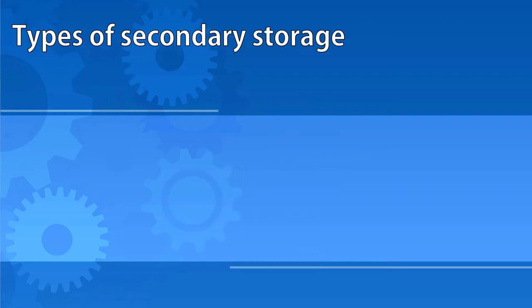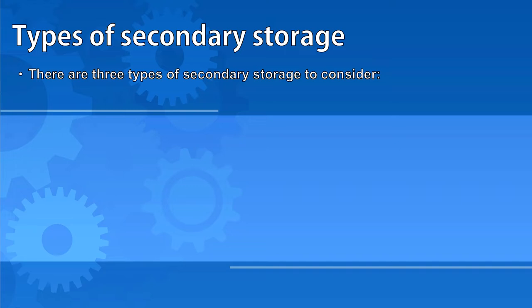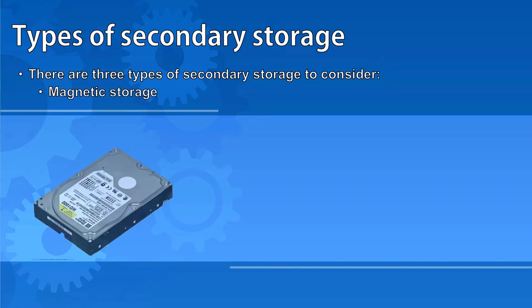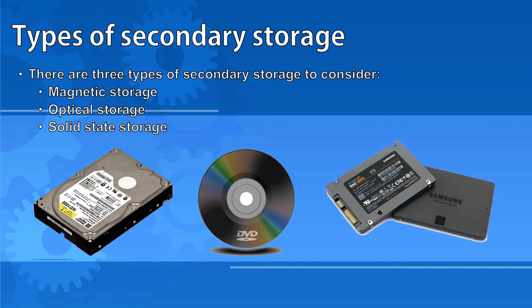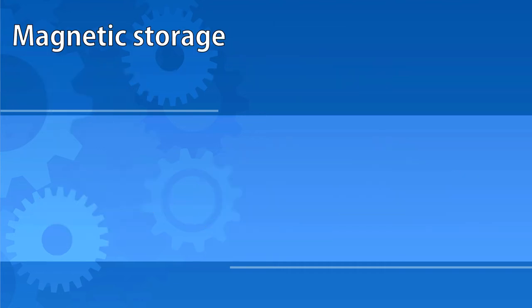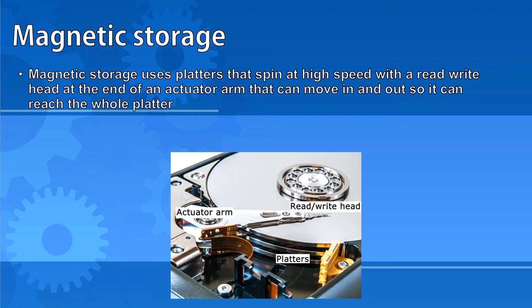There are three types of secondary storage you need to know about: magnetic storage, optical storage, and solid-state storage. Magnetic storage refers to hard disk drives. These use platters that spin at very high speeds. There's a read-write head at the end of an actuator arm that can move in and out, allowing it to reach any point on the platter.